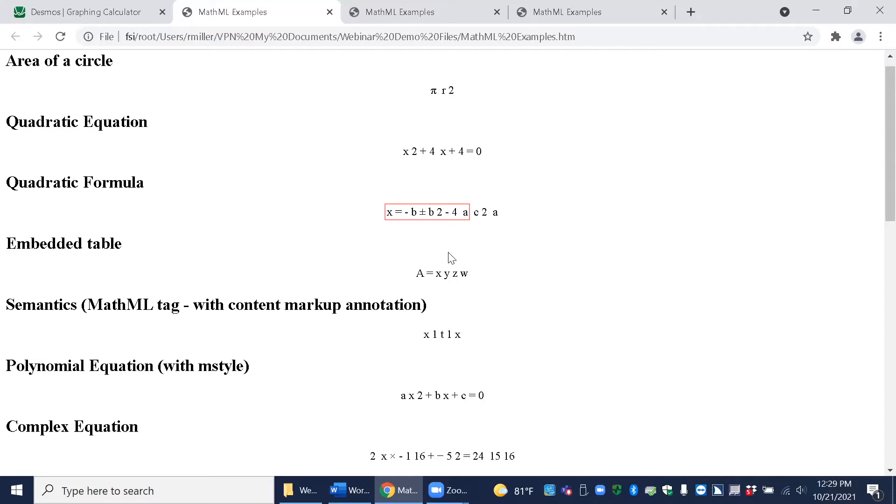Okay, so what we have is the equation. JAWS read it and also indicated math content, which tells me there's more I can do with this. I'm going to go ahead and press enter here. And it invokes the MathViewer. Equation navigation: x equals fraction, negative b plus or minus the square root of b squared minus 4ac over 2a.